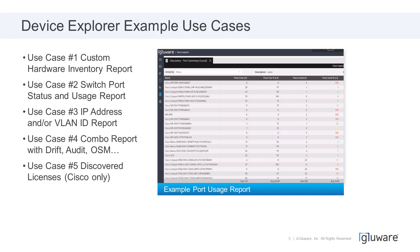Use case number five is ported over from Data Export, where we have the ability to export out Cisco licenses that are enabled and used on platforms. Now this functionality is exposed and available in Data Explorer as well, so you can look at the Cisco licenses in your equipment. We're going to take a look at all of these changes in the app, so let's move on to the live demo.